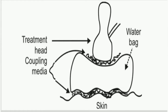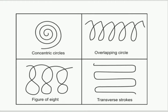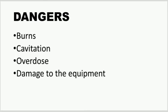In the water bag method, a rubber bag filled with degassed water is placed between the treatment head and the skin. The treatment head is pressed firmly onto the bag so that the layer of water is about one centimeter thick, and the head is moved over the surface of the bag. A problem with this method is attenuation, due to more interfaces and because rubber absorbs much of the ultrasound energy; this can be minimized by using condoms or thin balloons. The ultrasound head can be moved in different patterns such as concentric circles, overlapping circles, figure of eight, and transverse strokes.